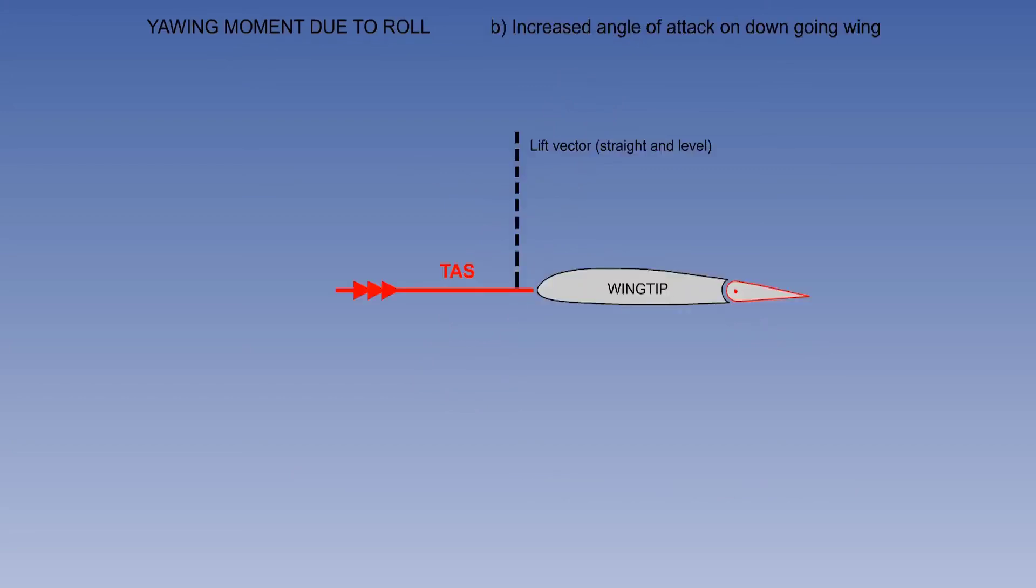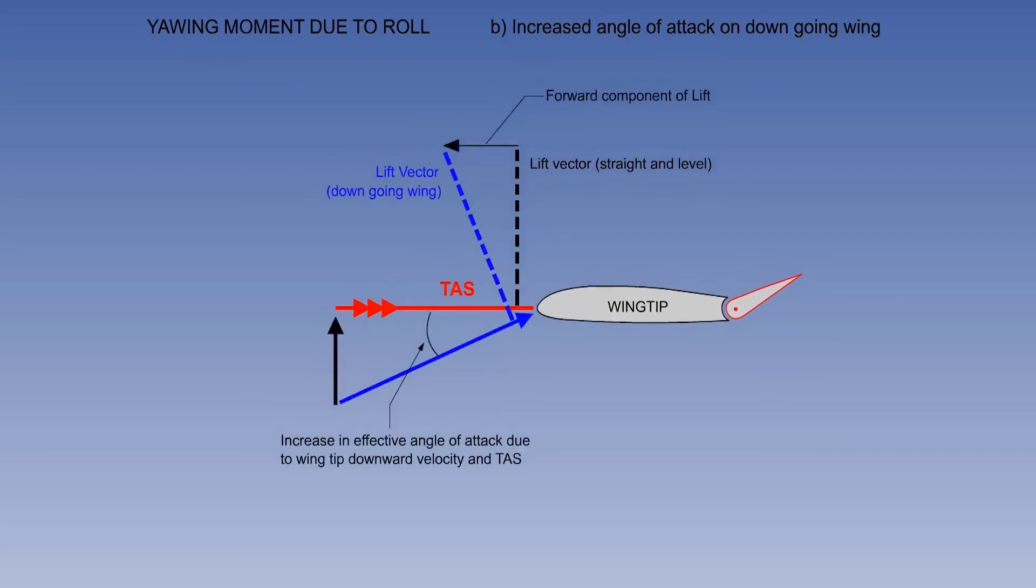The yaw from the roll is increased by the change in direction of the lift vectors on the down-going wing and the up-going wing. Only the down-going wing is illustrated.